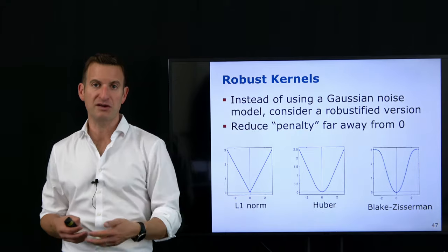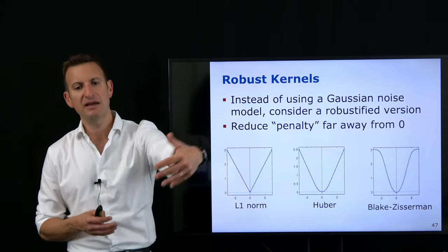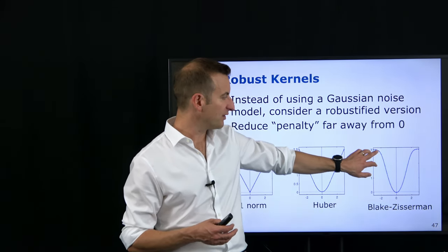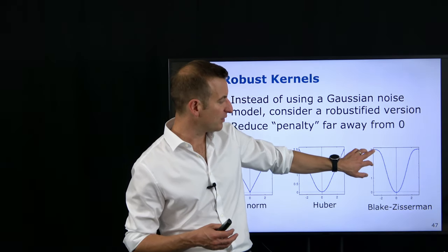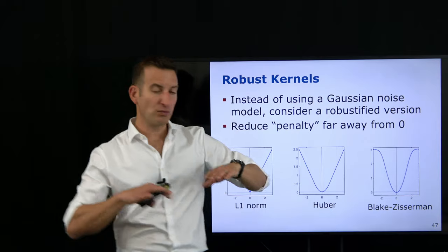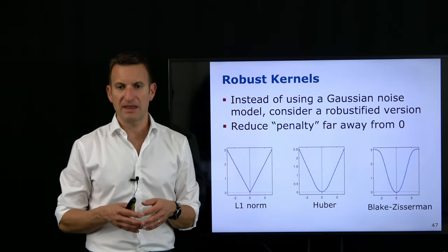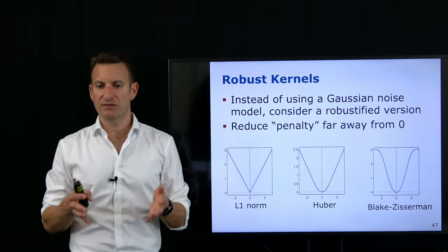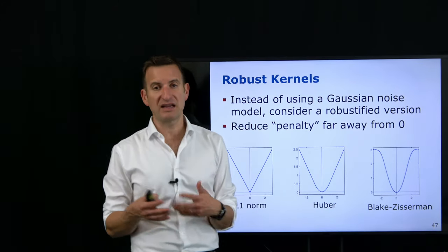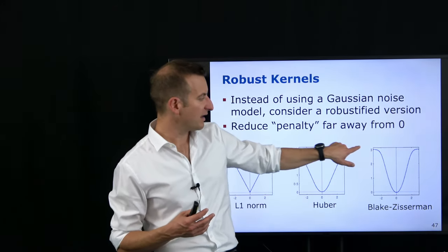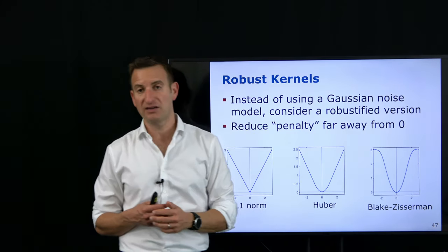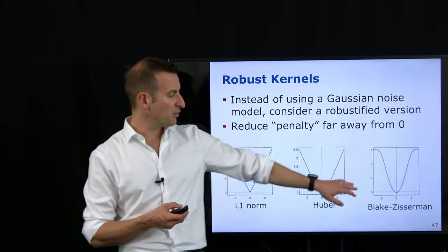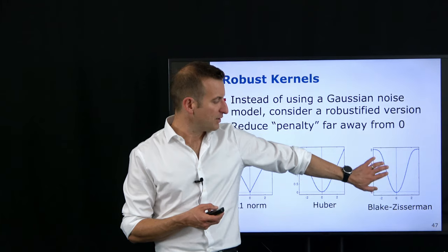If the error is very far from the zero-error configuration, this data point is basically ignored because the gradient — the Jacobian of the error function — is close to zero, so it will not impact my system anymore. But this also means the further you move away from your parabola, the better your initial guess must be. With such an error kernel, a bad initial guess means the system won't move you in the right direction because nearly all points will be considered outliers. These are three examples of robust kernels, and there is even a more generalized family of kernels.